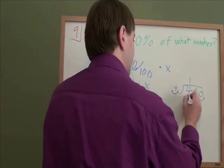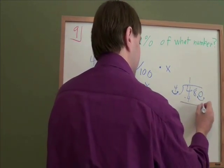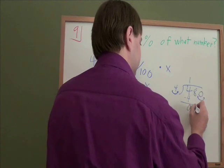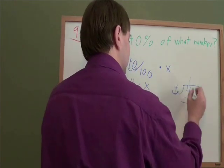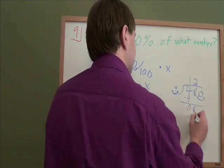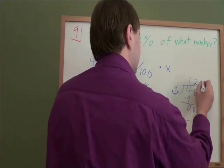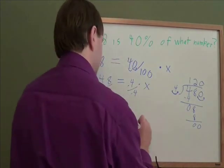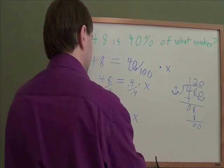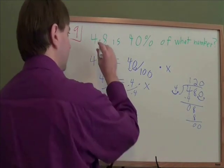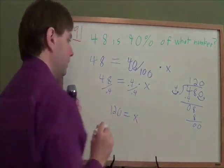4 goes into 4 one time. 4 goes into 8 two times. 2 times 4 is 8. And don't forget that last zero there. So x is 120. That's our answer. 48 is 40% of 120.